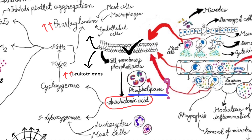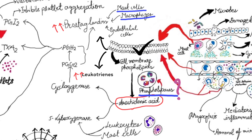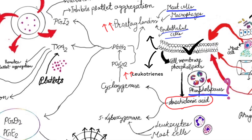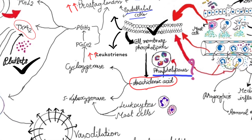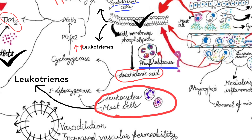Prostaglandins are produced by mast cells, macrophages, and endothelial cells. Thromboxane A2 is produced by platelets. Leukotrienes are synthesized by leukocytes and mast cells.